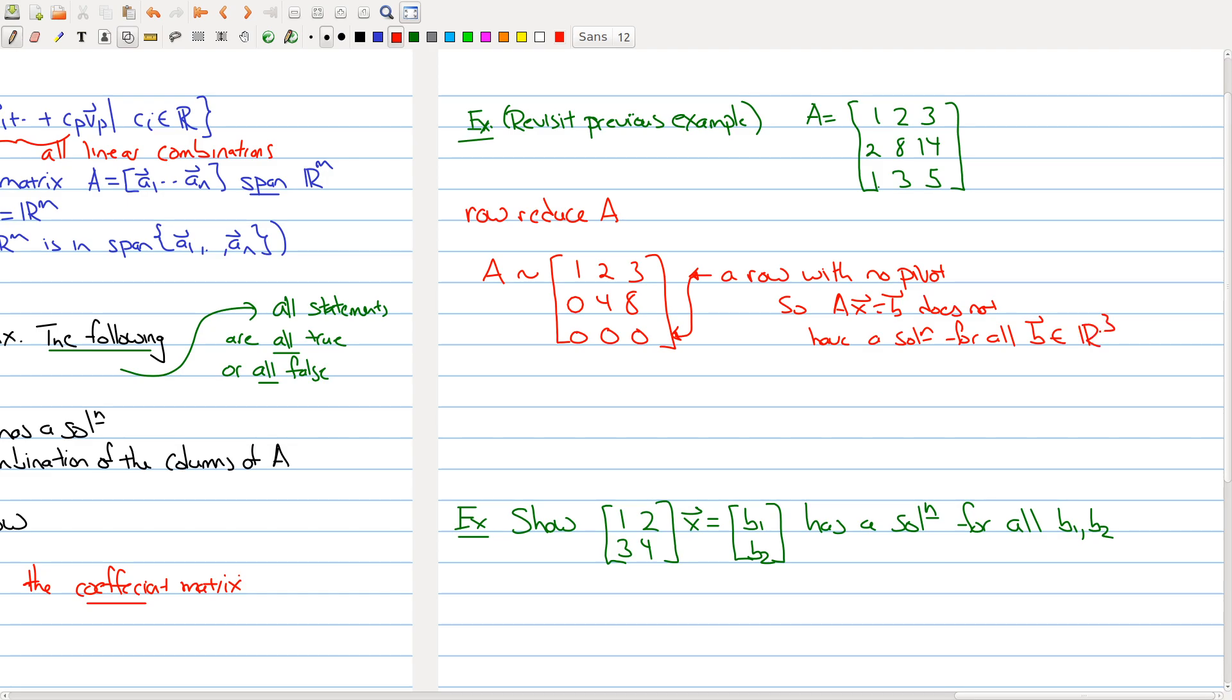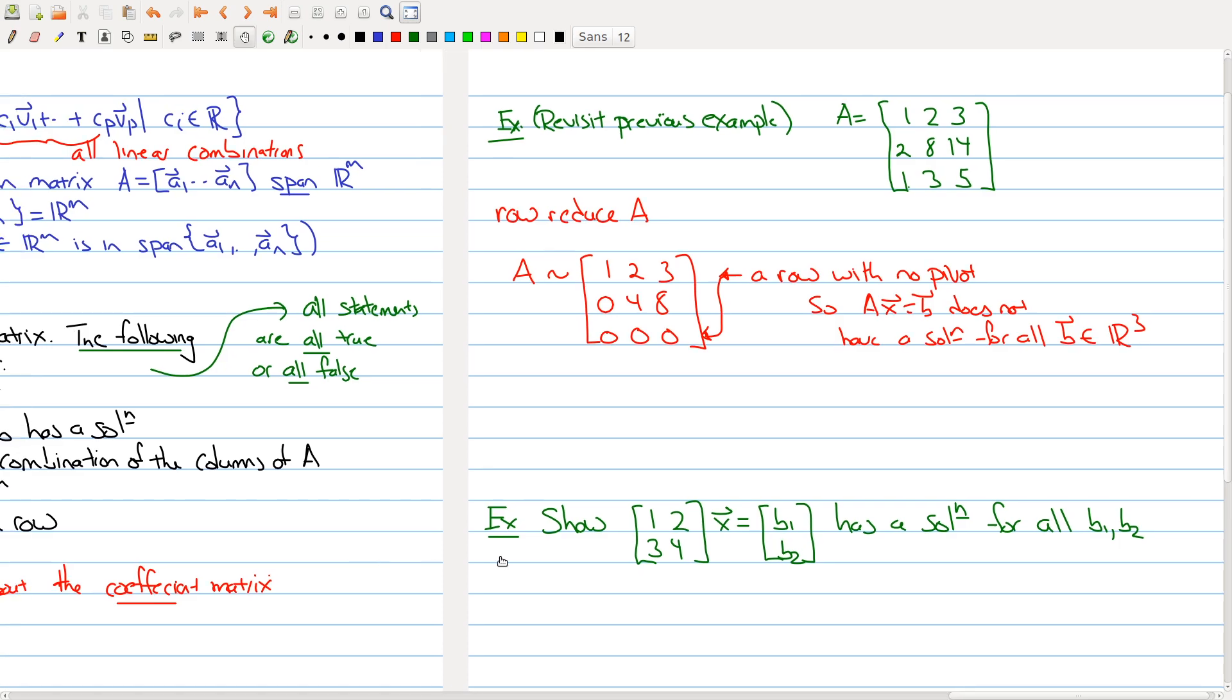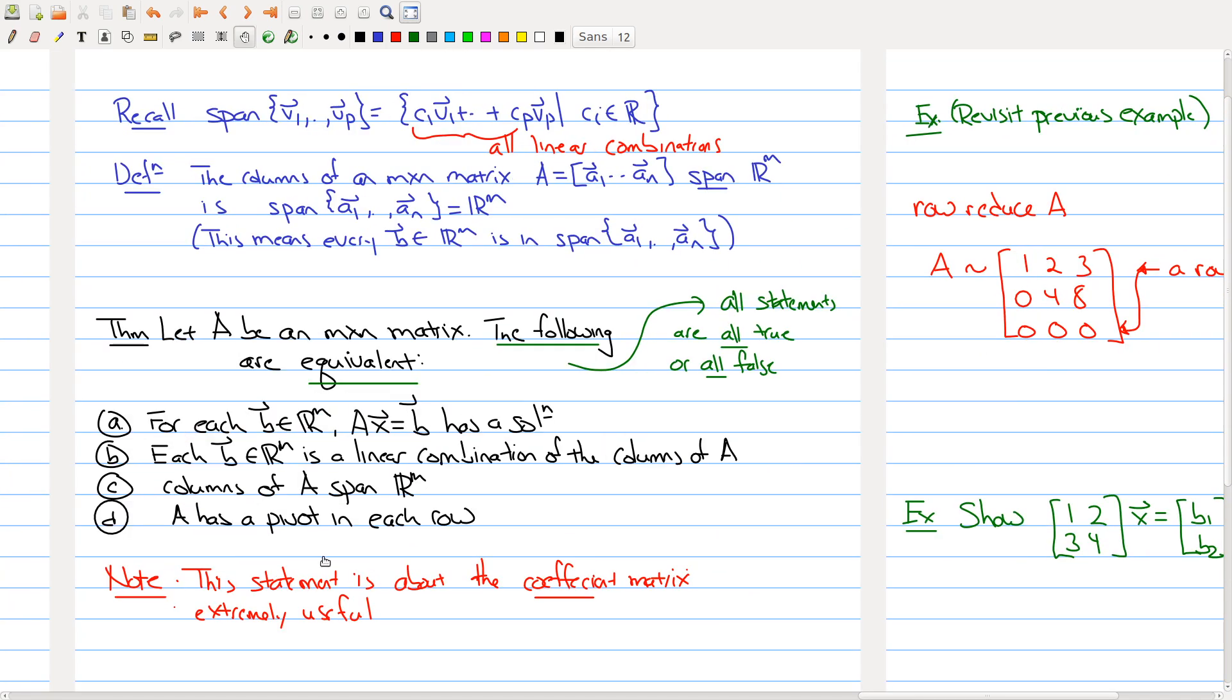So Ax equals b does not have a solution for all b inside of R^3. And the reason it doesn't have a solution, if we're using the theorem, is that our matrix A does not have a pivot in each row, so it does not have a solution for all b.